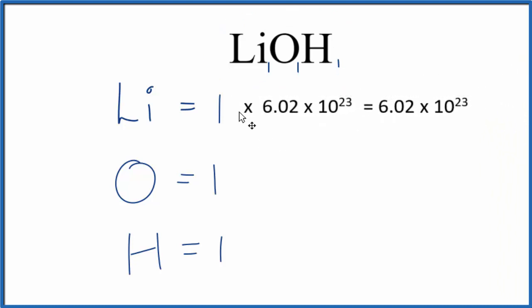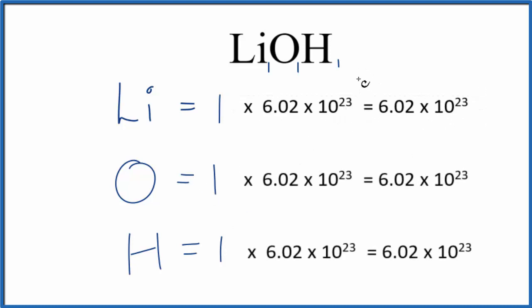So 1 times 6.02 times 10 to the 23rd. That means in one mole of lithium hydroxide we have Avogadro's number of atoms. Likewise we do the same for oxygen and hydrogen.